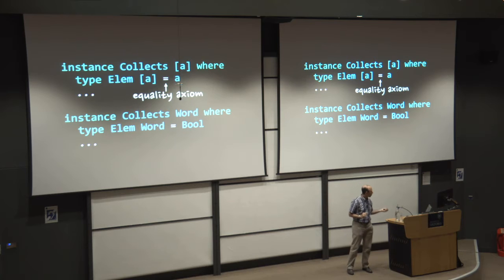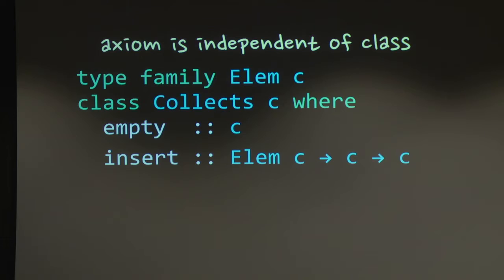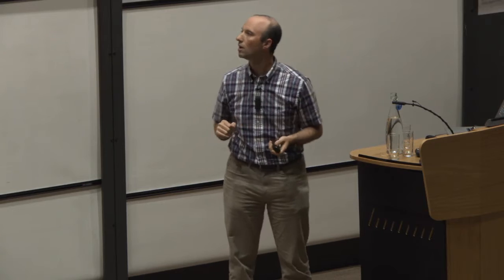But that equality axiom doesn't really tie into the class, right? That equality, Elm list of A, doesn't mention this Collects class anymore. So we can lift it right out. And we can just have this type family at the top level, and we can declare top level type instances. And we can still use it in the class there. Now once this escaped out of classes, Haskellers like to get devilish ideas, and thought, well maybe we can do some type level computation with these things.